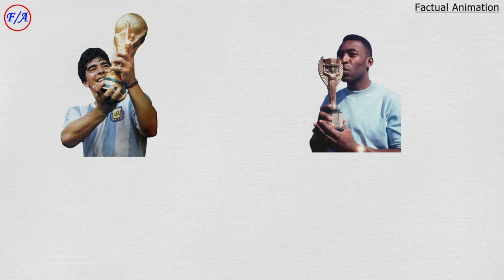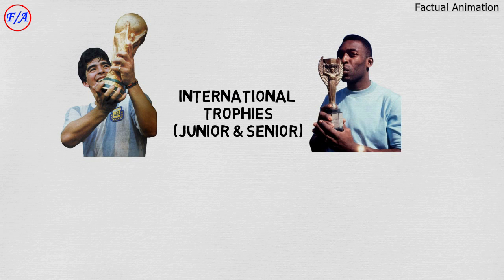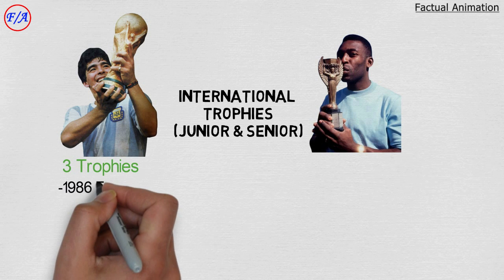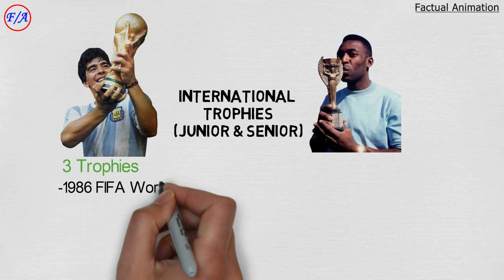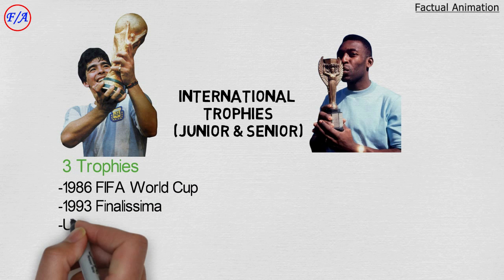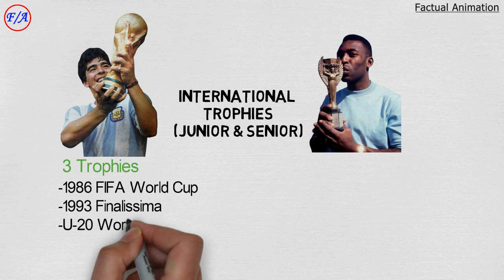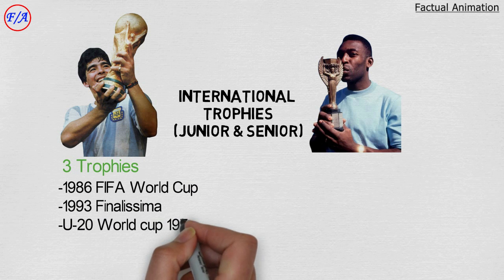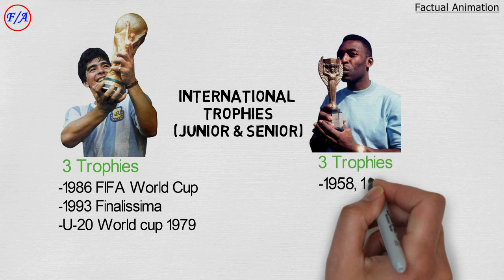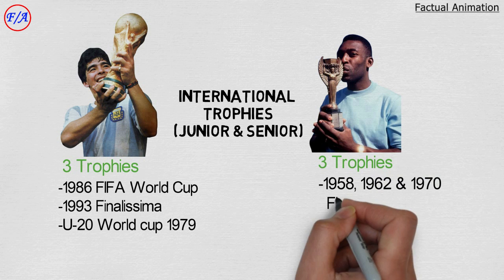Comparing international trophies in both junior and senior competitions: Maradona won 3 trophies — the 1986 World Cup, the 1993 Finalissima, and the 1979 Under-20 World Cup. Pelé also won 3 trophies — the 1958, 1962, and 1970 FIFA World Cups.